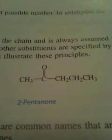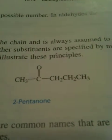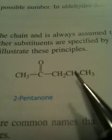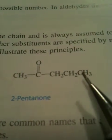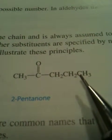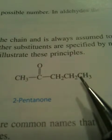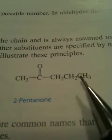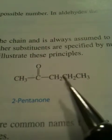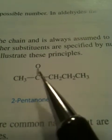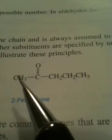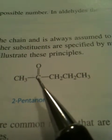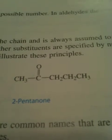Now let's look at this one — it's a 2-pentanone, not propanone. It has one, two, three, four, five carbons in the chain. The carbonyl group is closest to this end, so we number from there: one, two — giving us 2-pentanone.